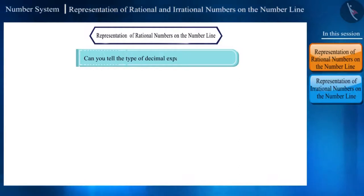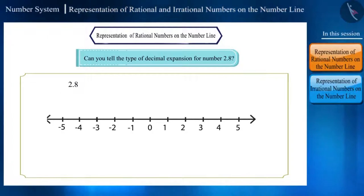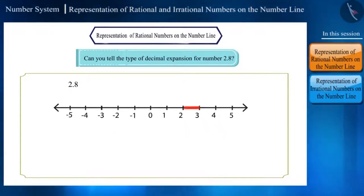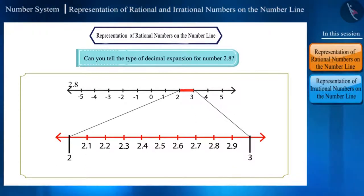Friends, can you tell the type of expansion of the decimal number 2.8? This is a terminating decimal. Let's represent this number on the number line. The number 2.8 will lie between the numbers 2 and 3. Now we will divide the portion between numbers 2 and 3 into 10 equal parts like this.